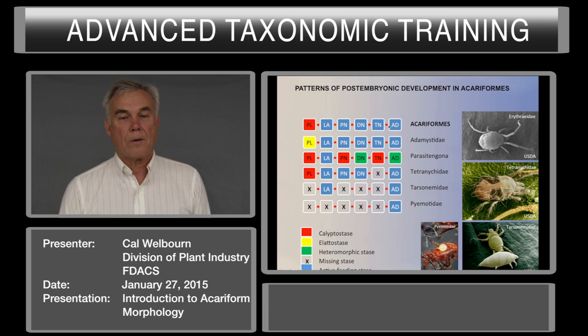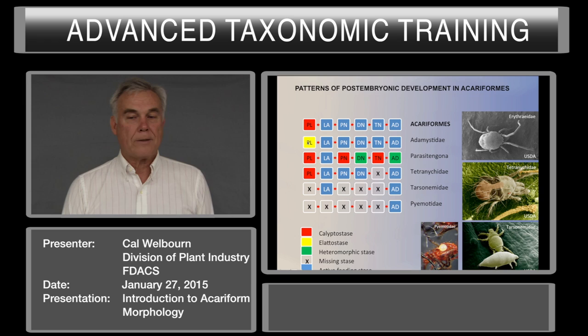Take the Atomistidae: they have a latistase pre-larva—that is, it walks around but doesn't feed. Otherwise, their life cycle is normal: feeding larva, feeding protonymph, deutonymph, tritonymph, adult.